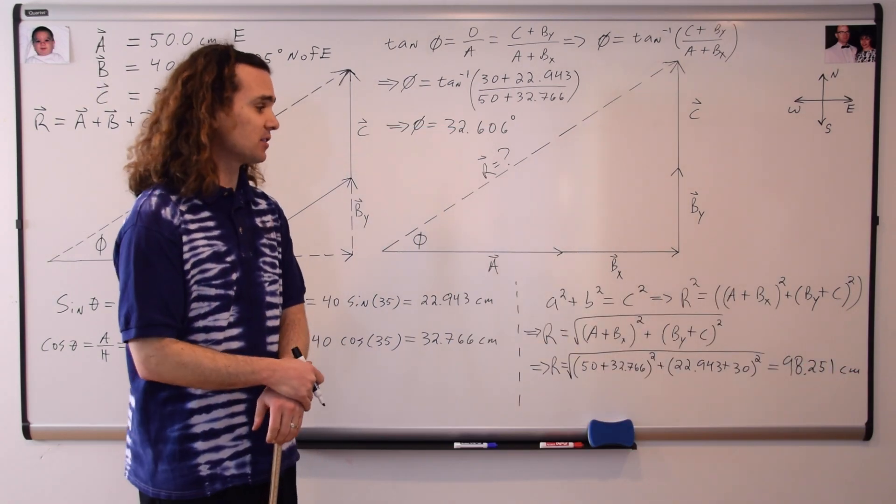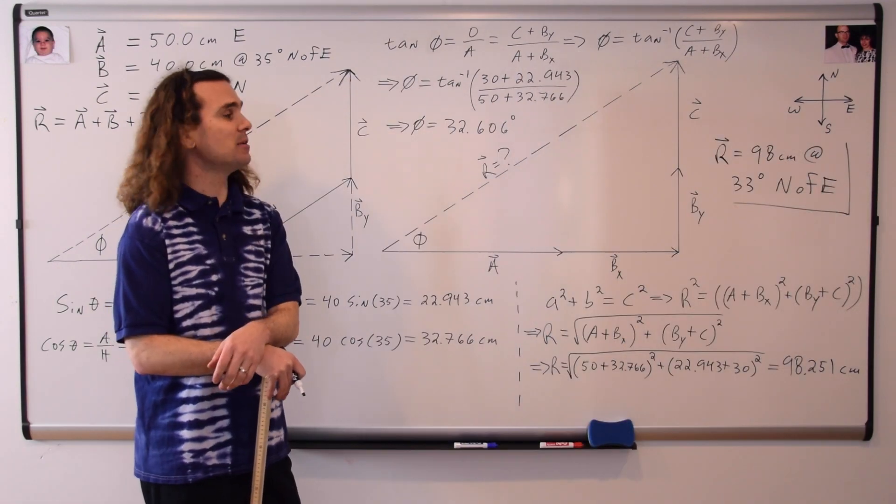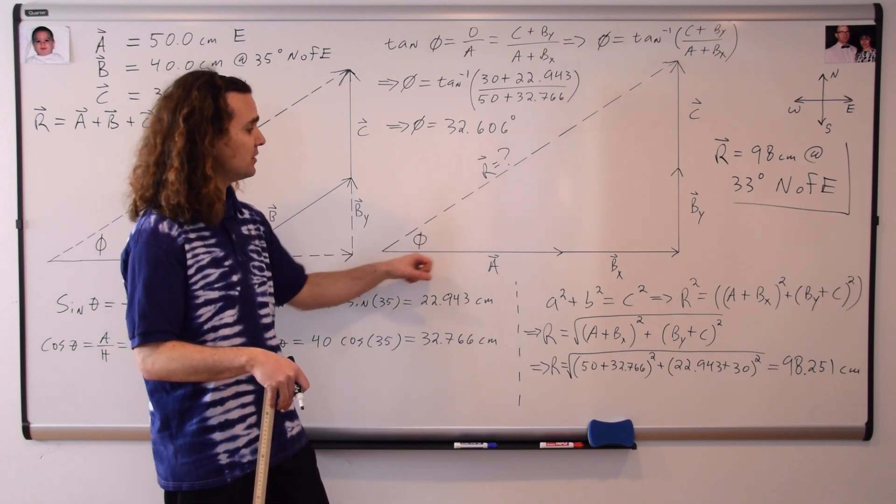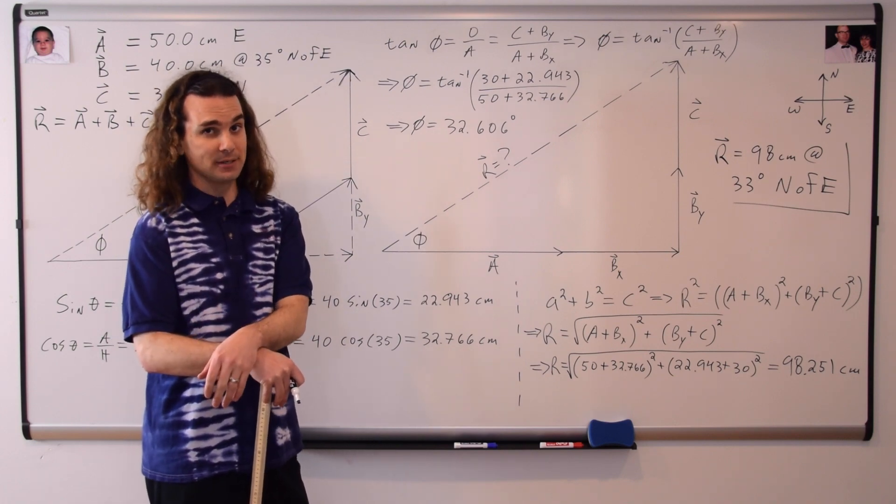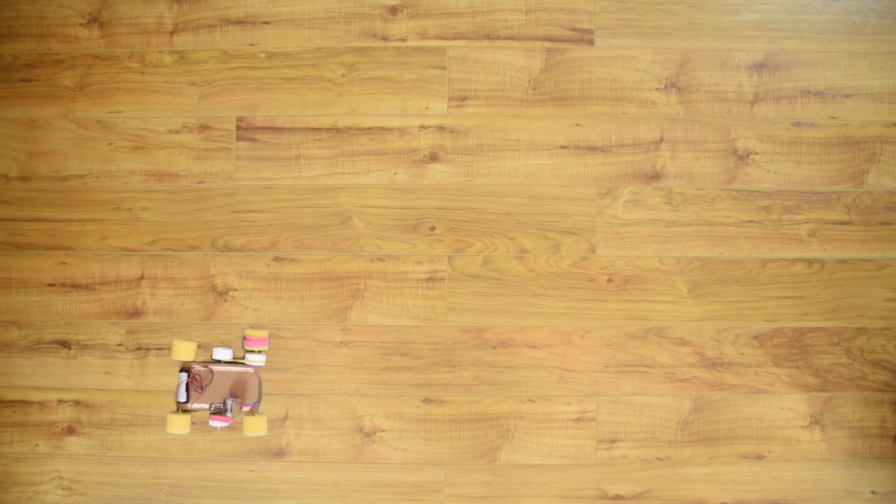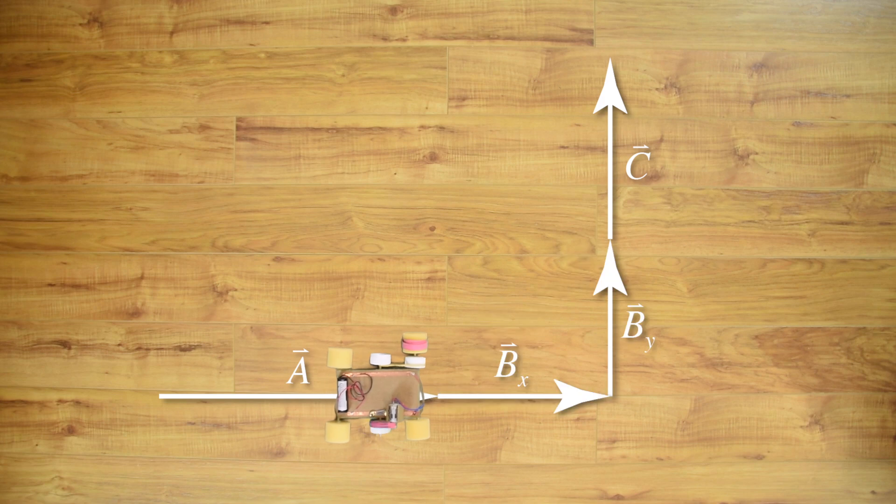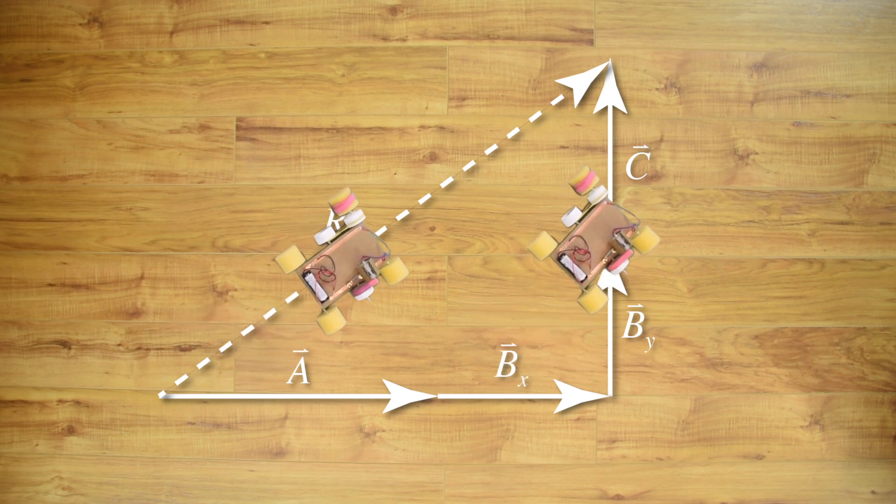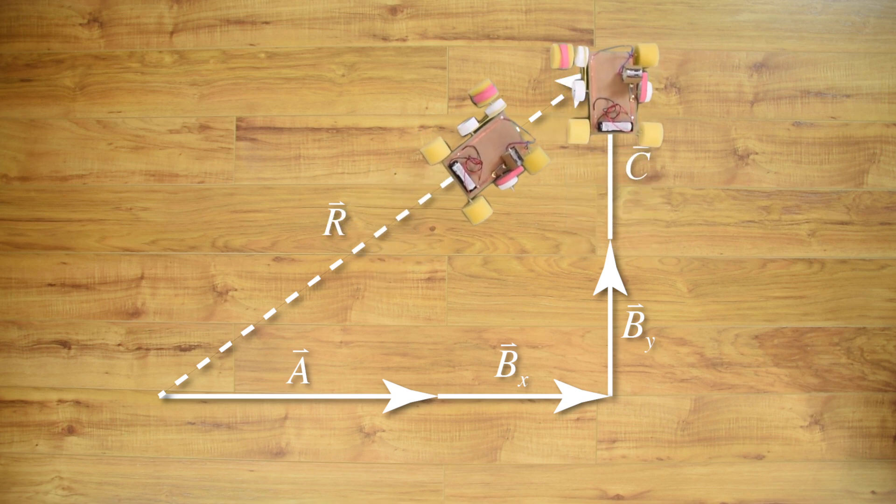And with two sig figs, the resultant vector or total displacement of our slow velocity racer is 98 centimeters at an angle of 33 degrees north of east, because this angle phi is 33 degrees northward from east. Now, let's just review what this means for a moment. Slow velocity racer can travel the vectors A, B, and C, or the vectors A, B in the x direction, B in the y direction, and C, or even just the result vector R, and she will still start and end in the same location, and therefore have the exact same total displacement. That is what we just figured out.